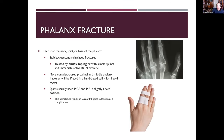A phalanx fracture can occur at the neck, shaft, or base of the phalanx. Stable, non-displaced fractures can be treated with buddy taping. More complex fractures are placed in a hand-based splint for three to four weeks with the MCP and PIP in slightly flexed positions. A complication is loss of PIP extension after immobilization — something to work on in physical therapy.